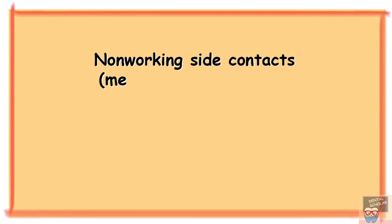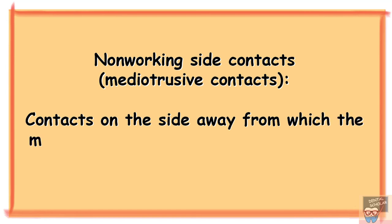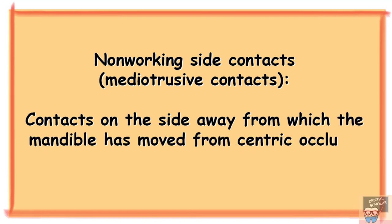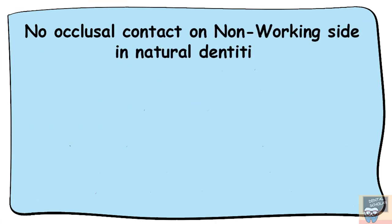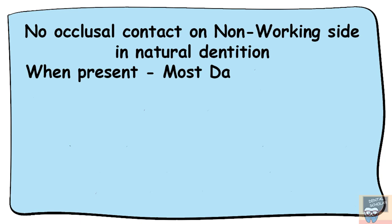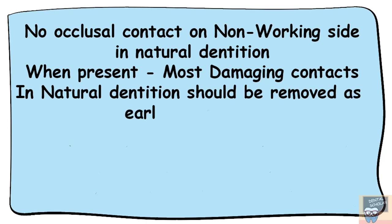Non-working contacts, or mediotrusive contacts, are contacts on the side away from which the mandible has moved from centric occlusion. When you move your mandible towards the right, the contact on the left side is non-working and the contact on the right is working. Normally there is no occlusal contact on the non-working side in a natural dentition. When present, these are the most damaging contacts and should be removed as early as possible.